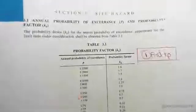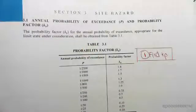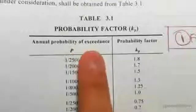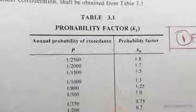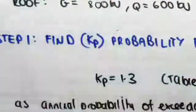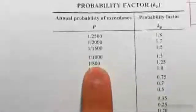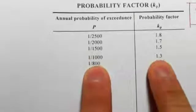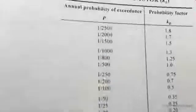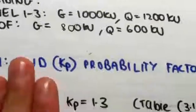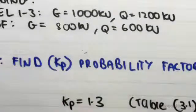So table 3.1 on page 18. We have a table here, so I'm zooming in for you. We're given annual probability of exceedance versus probability factor. We were told an annual probability of exceedance of one in one thousand, so that means using this table we get a kp value of 1.3. So kp is equal to 1.3 based on that table. So that's step one.